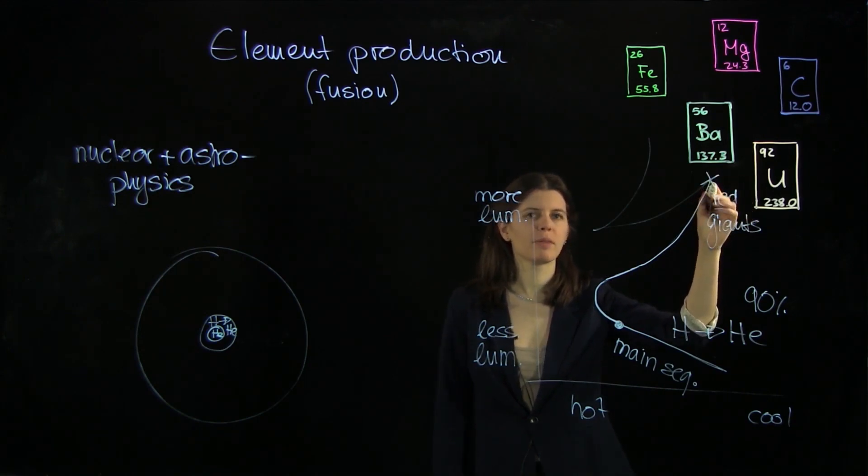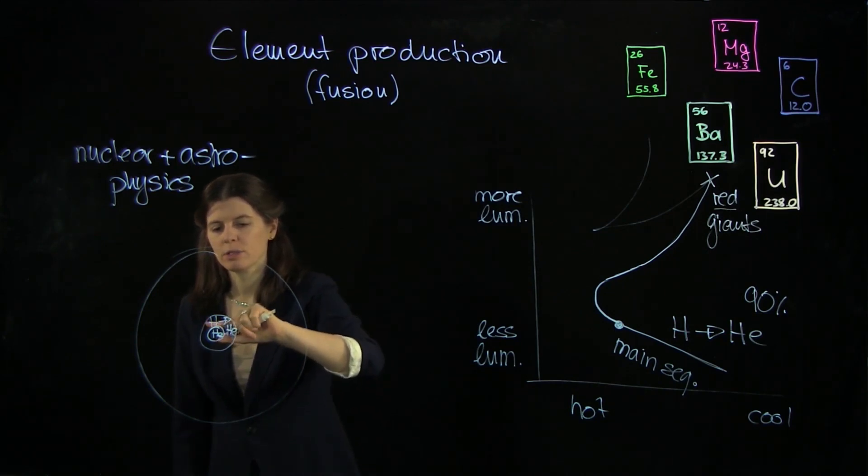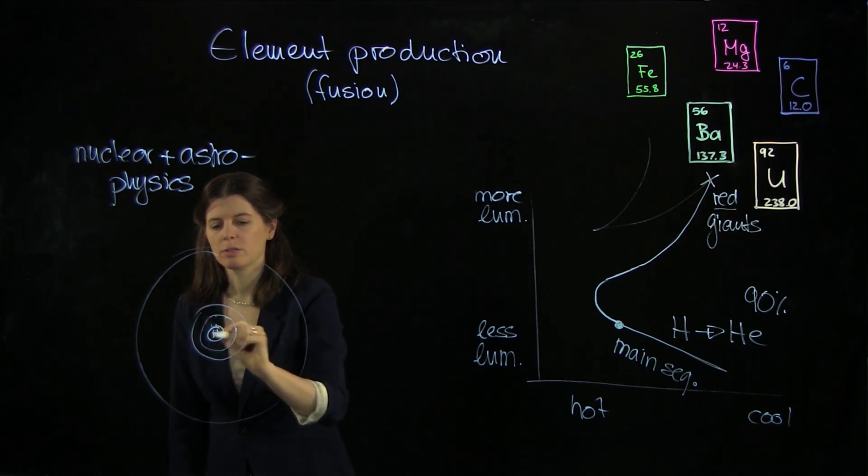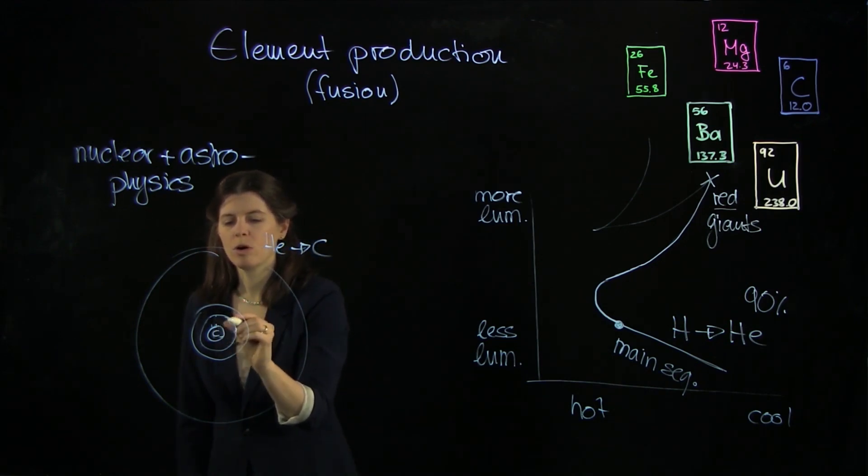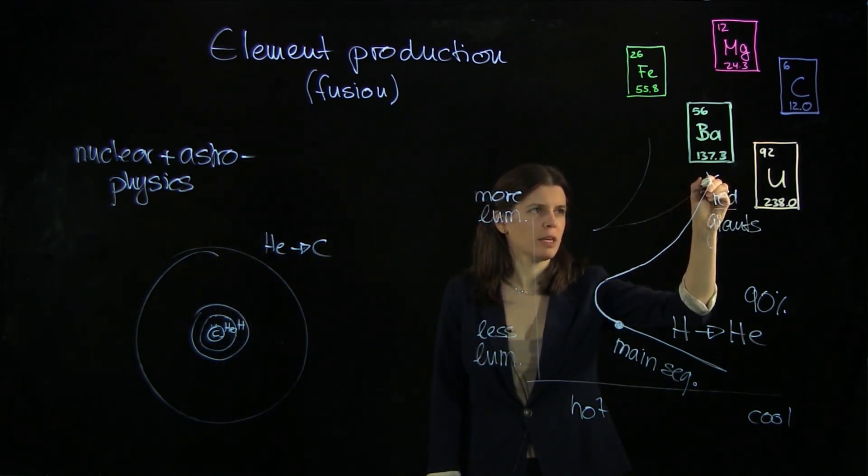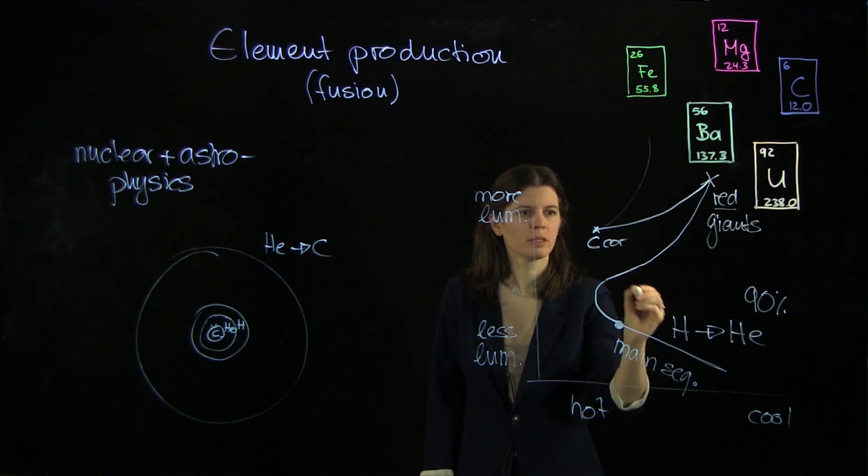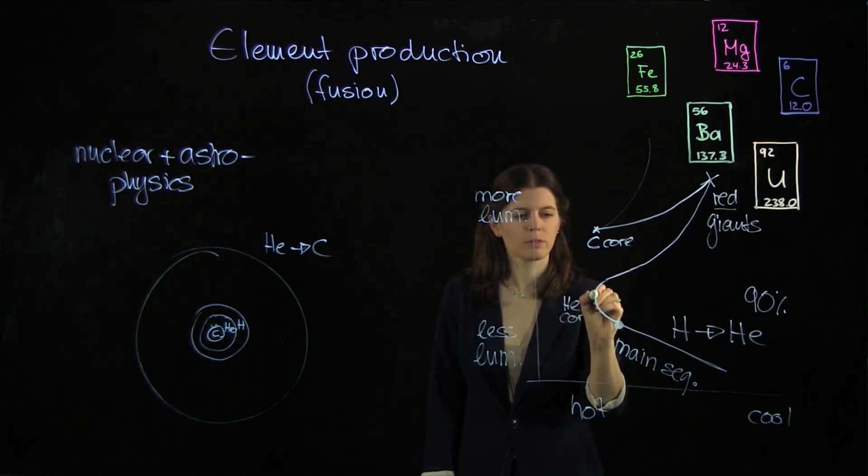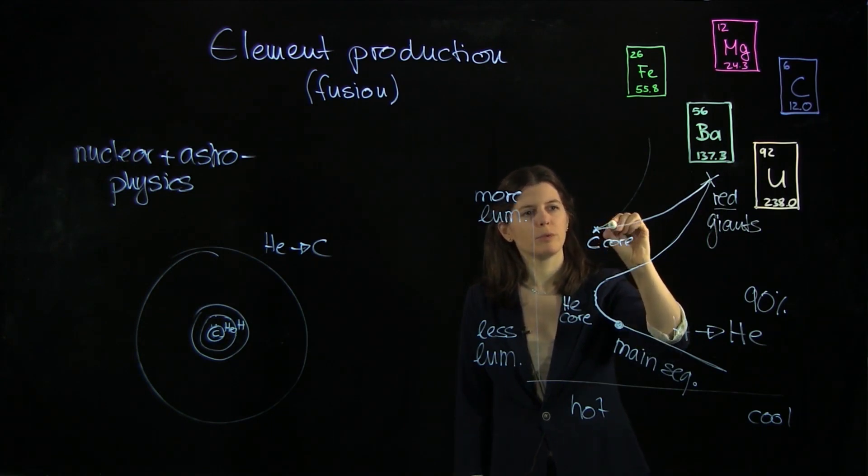And then up here we have something called the helium flash which means the helium here in the core is now being converted to carbon. So we eventually get helium gets converted to carbon so eventually we're going to get to a carbon core and then we have helium burning further out and hydrogen burning yet further out. So when the helium burning starts here by the time it reaches here it has this carbon core. So here it reaches a helium core in this region and then helium starts to burn and then by the time it gets down here we have the carbon core and then it moves up here.